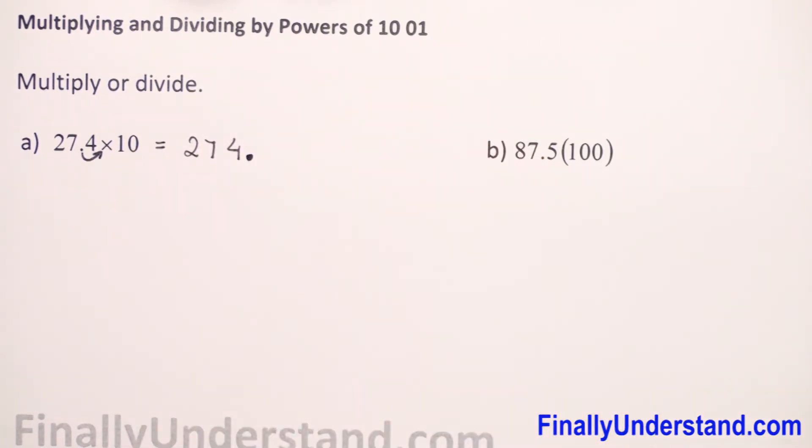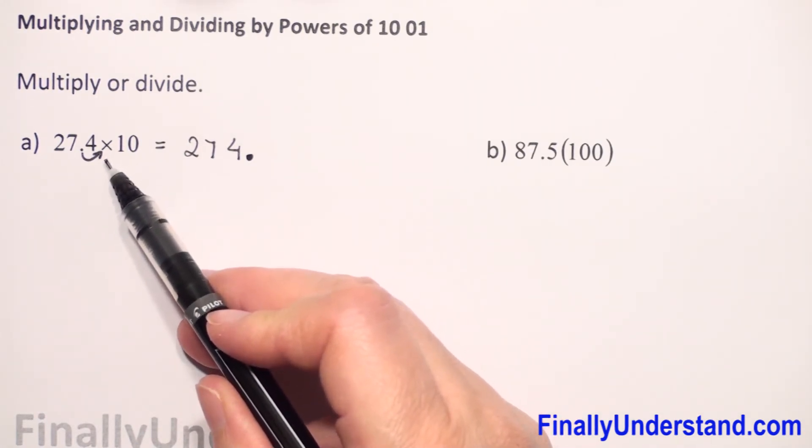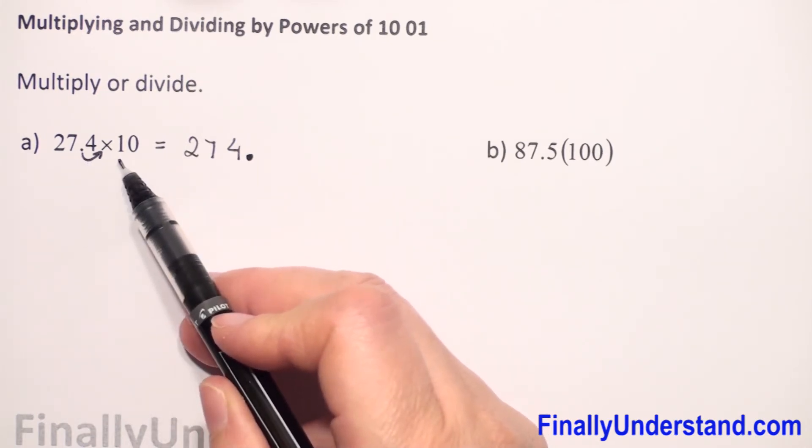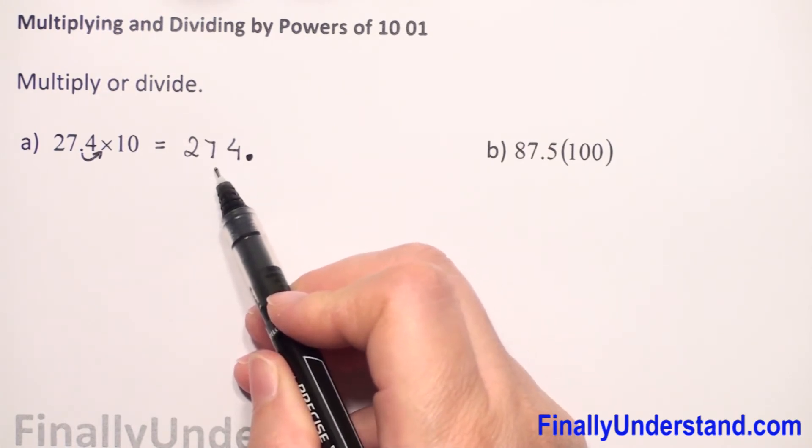And how do we check if the solution is correct? When we multiply times 10, the number should be greater. We have 27.4, and when we multiply it by 10, we get 274. The number is greater, so everything is okay.